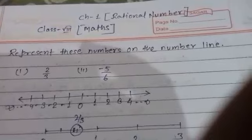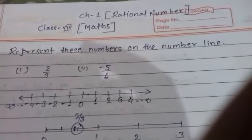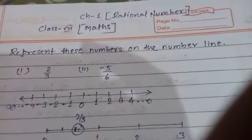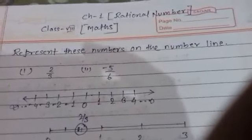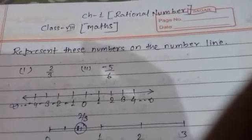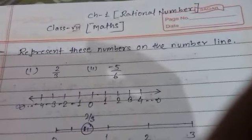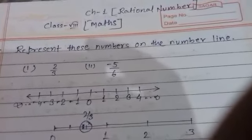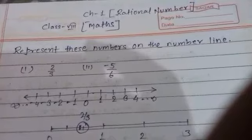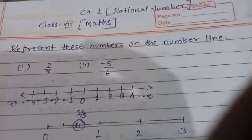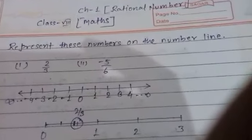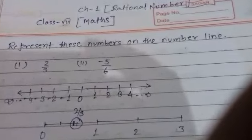Students, today I am going to complete Chapter 1 by explaining two important questions from this exercise. The first question is to represent rational numbers on the number line, and the second one is to determine the rational numbers between two given rational numbers.